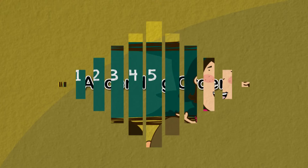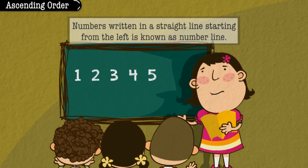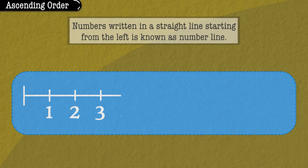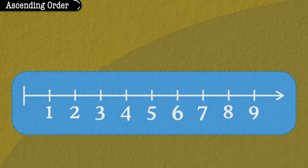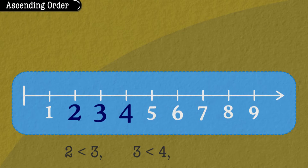We know that numbers written in a straight line, starting from the left, is known as a number line. On this number line, we see that 2 is less than 3, 3 is less than 4, 4 is less than 5, etc.